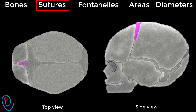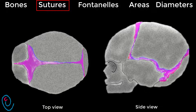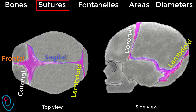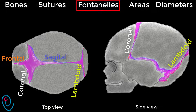Sutures are non-ossified membranes that connect skull bones. The frontal suture lies between the two frontal bones. The sagittal suture lies between the two parietal bones. The coronal sutures lie between the frontal bones anteriorly and the parietal bones posteriorly. The lambdoid sutures lie between the parietal bones anteriorly and occipital bones posteriorly. Some sutures have no obstetric importance, such as sutures between the parietal bones and temporal bones.